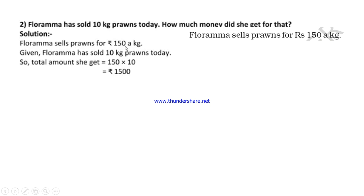Florama sells prawns for Rs. 150 per kg. Given that Florama has sold 10 kg of prawns today, so we are multiplying: 150 multiplied by 10. Here we are doing short multiplication, children, because the first number is ending with 0 and the second number also ends with 0. So to do short multiplication, let's take out the 0s. We have one 0 here and one 0 here, so totally we are taking out 2 zeros.